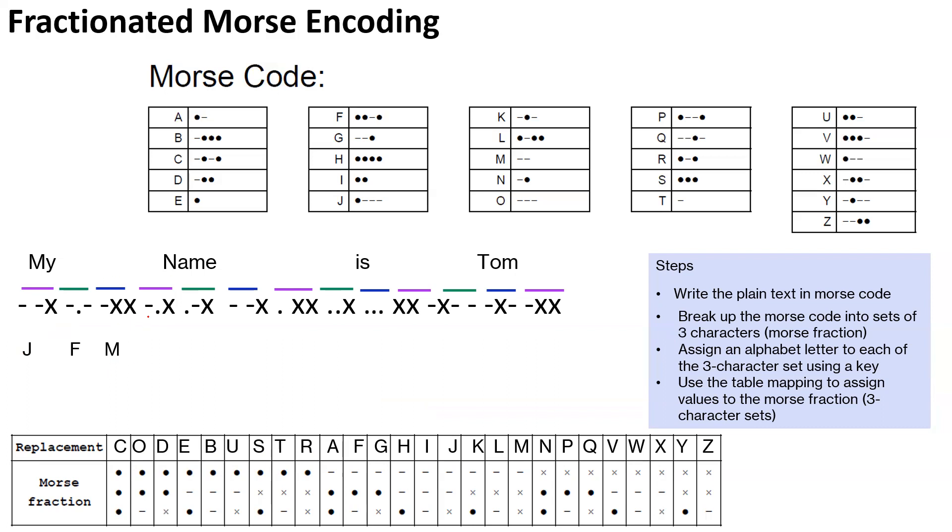So this is it. We keep going on dash dot X. So dash dot X is G. Dot dash X is U. Dash dash X is J. Dot XX is R. So we continue building these things.